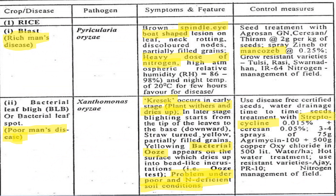Let's move to the next topic. Here we are talking about rice. This is the first crop — rice. I have highlighted everything for you so there is no confusion. You have to learn what I have highlighted. Why do we call the blast of rice a 'rich man's disease'?